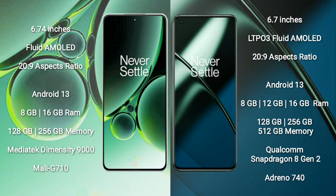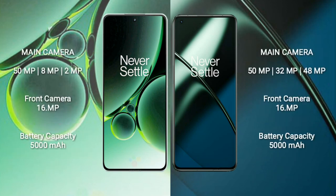The OnePlus 11 comes with 8GB, 12GB, or 16GB of RAM and 128GB, 256GB, or 512GB of internal storage. It is powered by the Qualcomm Snapdragon 8 Gen 2 processor with an Adreno 740 GPU.